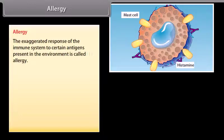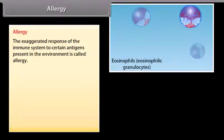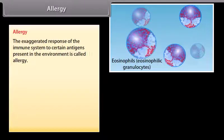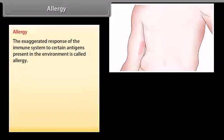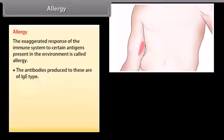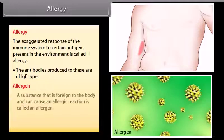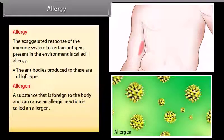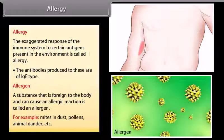Allergy is the exaggerated response of the immune system to certain antigens present in the environment. The antibodies produced in response to these are of the IgE type. A substance that is foreign to the body and can cause an allergic reaction is called an allergen — for example, mites in dust, pollens, animal dander, etc.